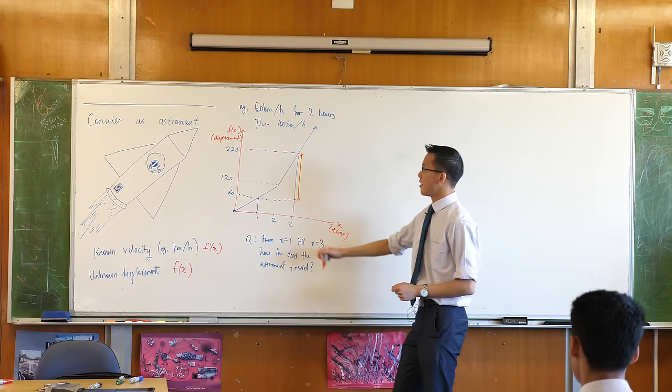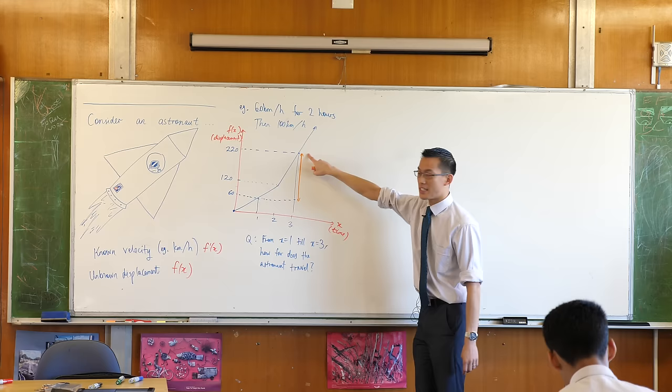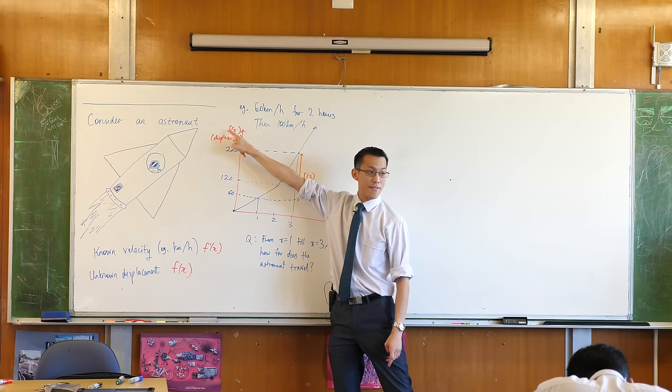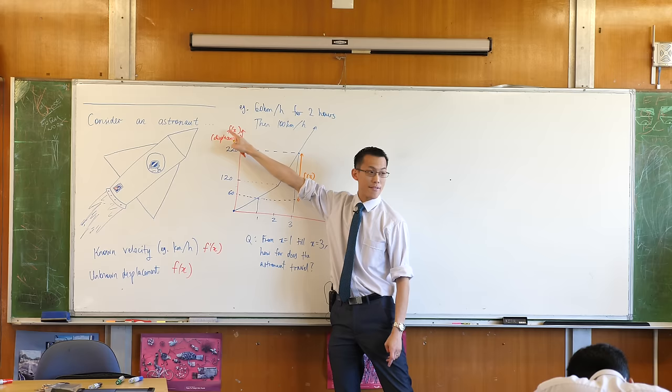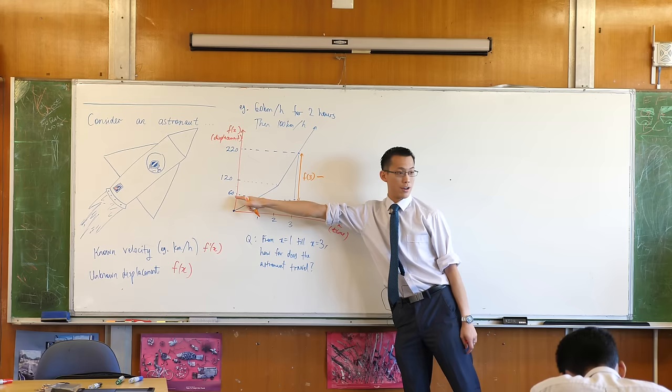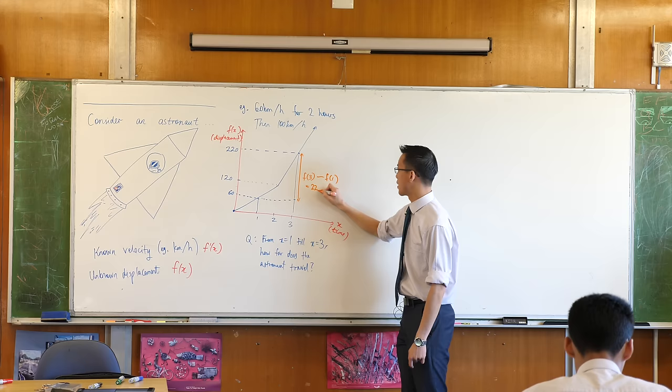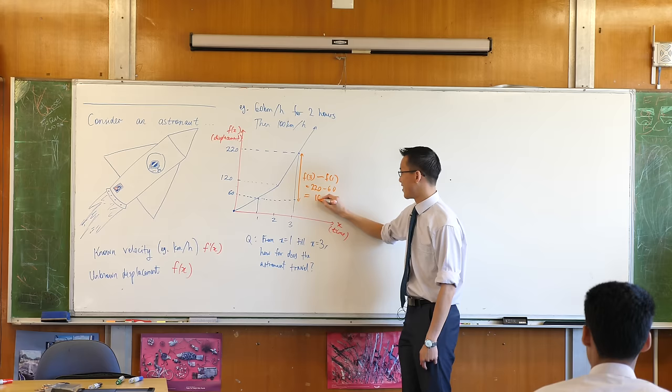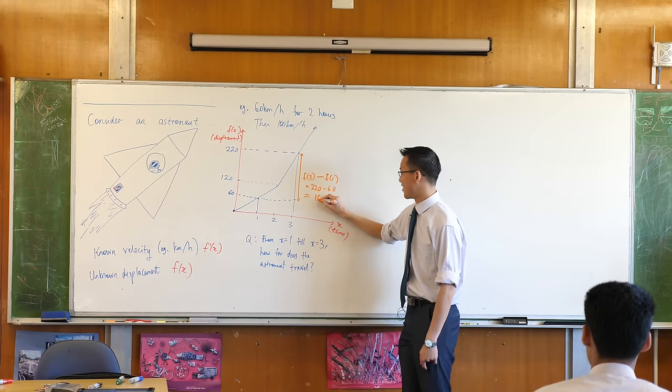Now, before we write down what that number is, I want you to see how we calculate it. If my function here, this weird piecemeal function that I don't even know what it is, if it's equal to 220 there, I'm interested in that value because it's F of 3. That's where I am. X equals 3, the Y value will be F of 3. And then what I subtract to get the difference is this value. But what's that? F of 1, because that's my starting point. That, of course, is 220 take away 60, so it is 160. That's the answer. How far does the astronaut travel? Answer 160, not complicated.